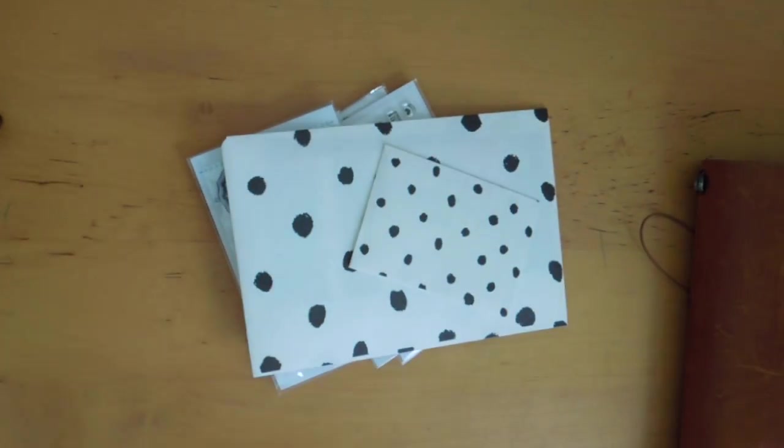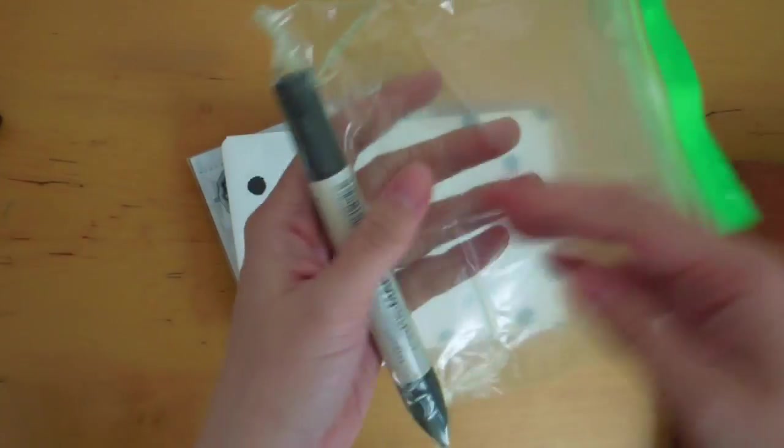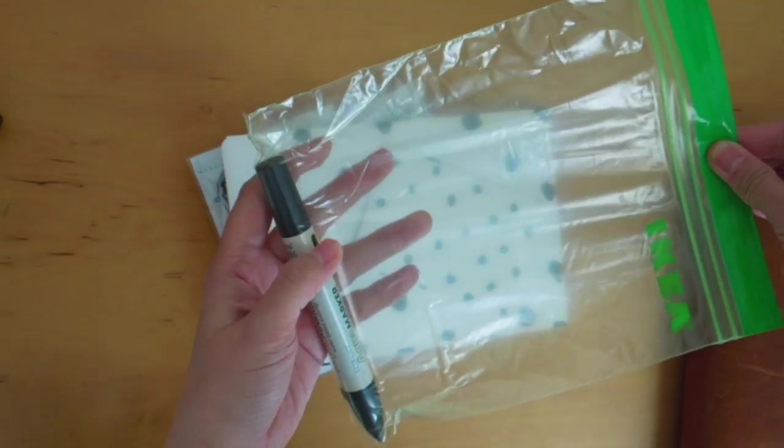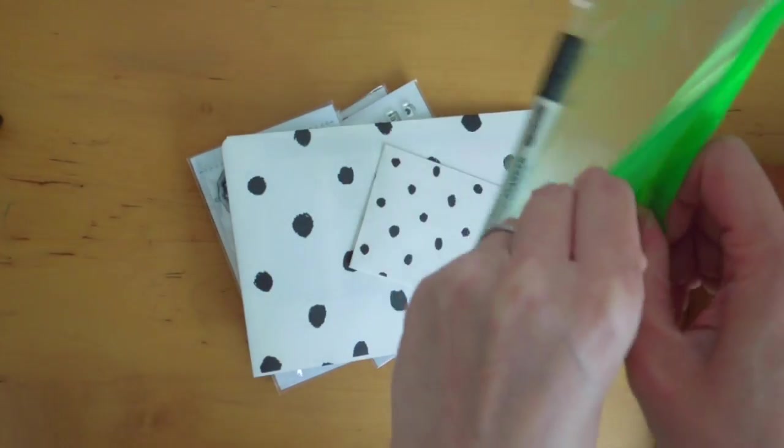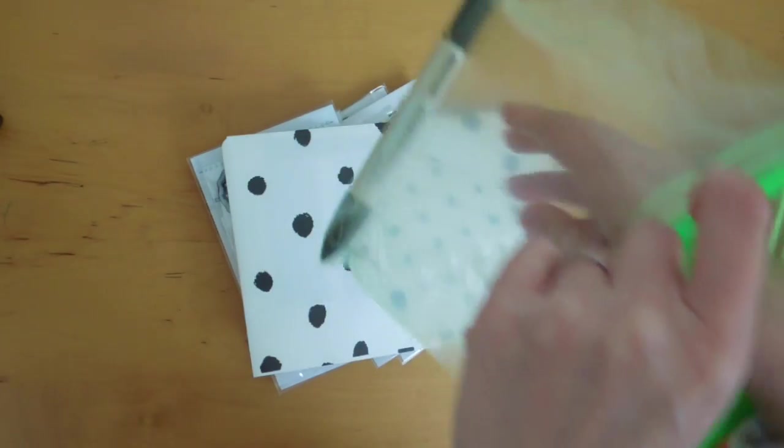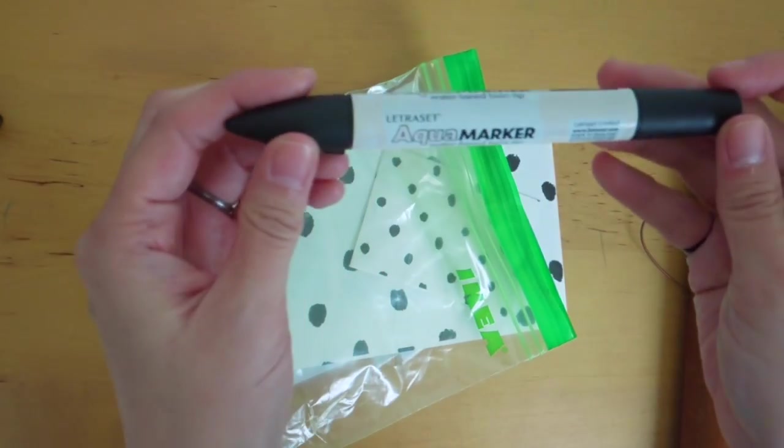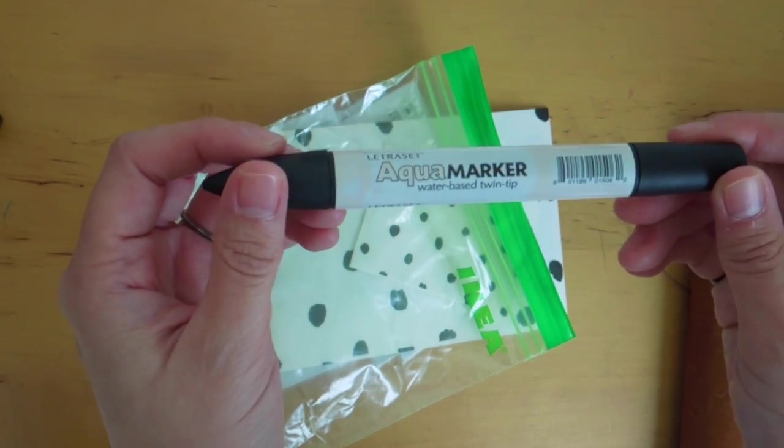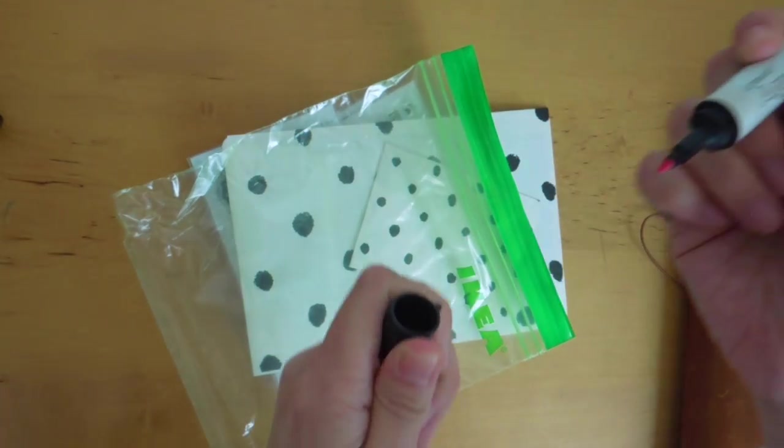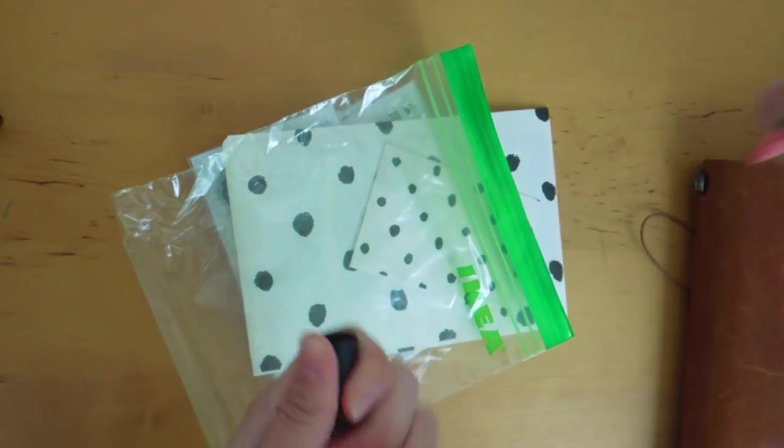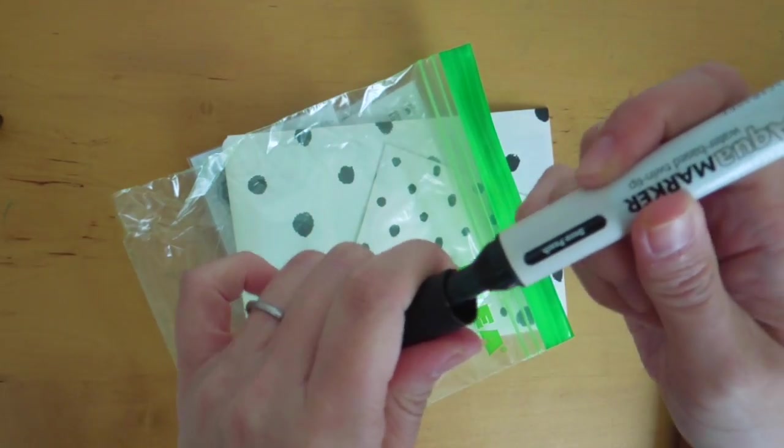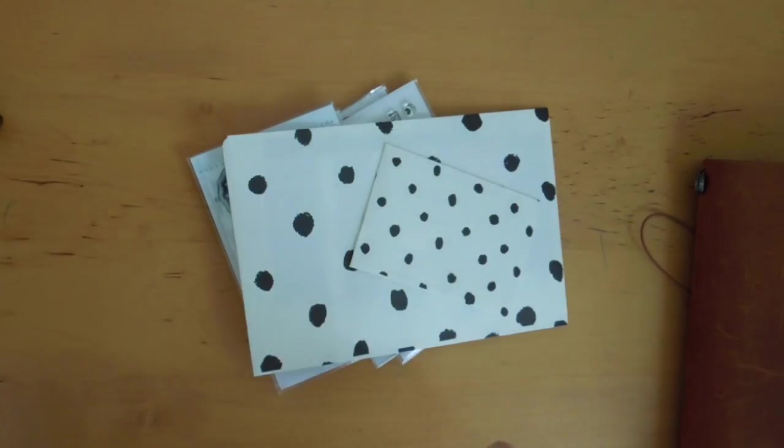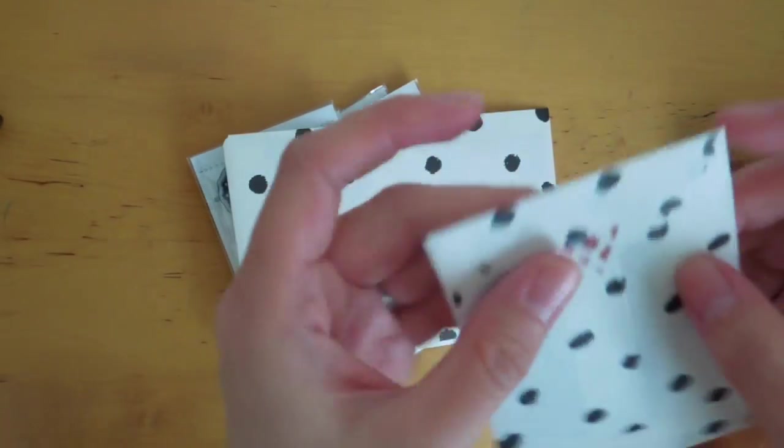Here we go. Oh boy she sent me some other stuff. It looks like this one here. So I suppose this is kind of like a Happy Mail as well. This is the Aqua Marker Water Base Twin Tip. Oh really really excited to try this. This is in Deco Peach and I think this is a note.